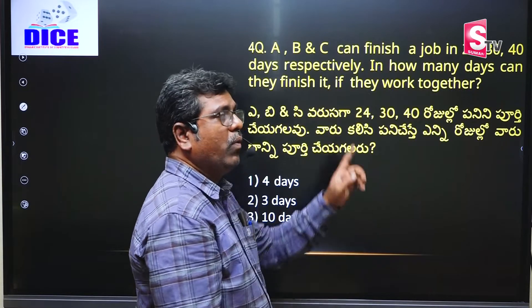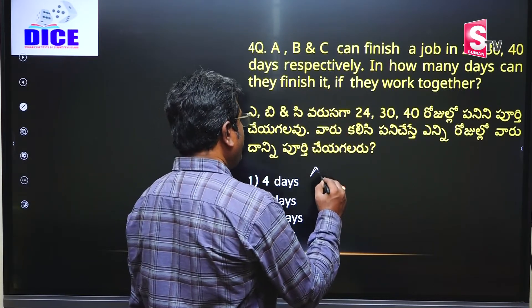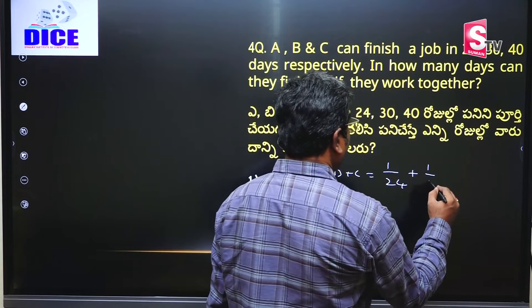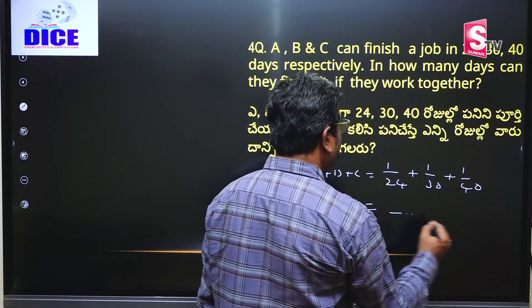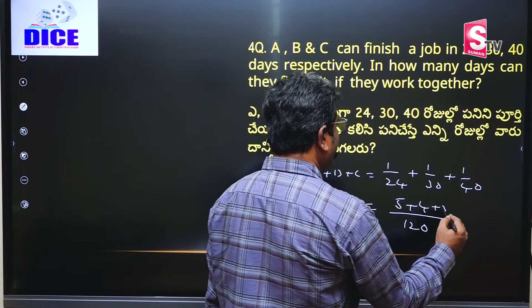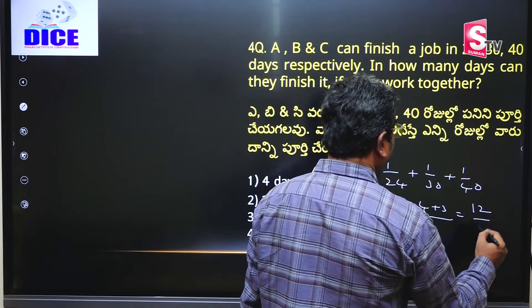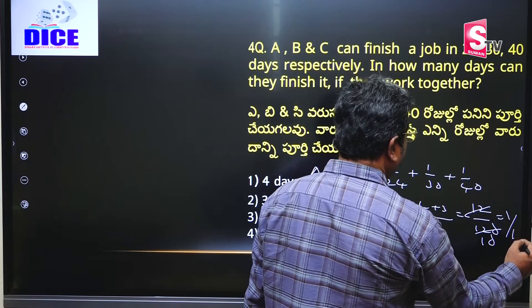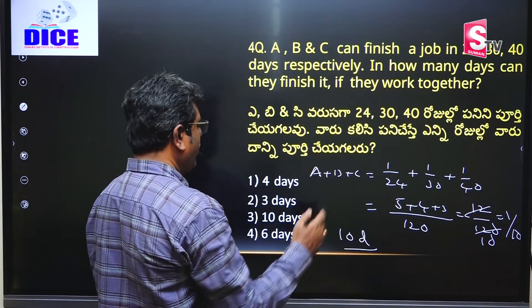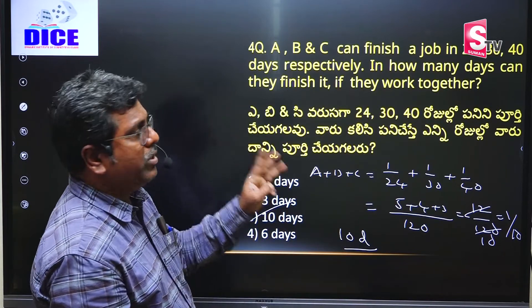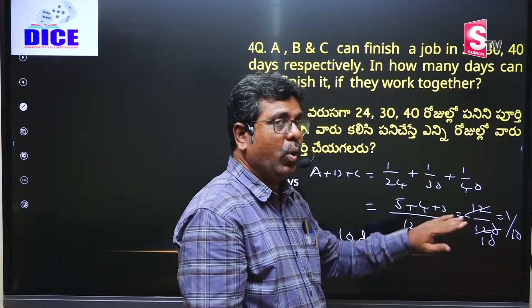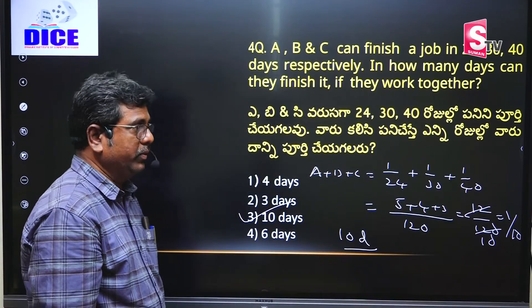Suppose you have three members. Then you go directly to one day's work: A plus B plus C's one day's work equals 1/24 plus 1/30 plus 1/40. The LCM of 24, 30, and 40 is 120. So 5/120 plus 4/120 plus 3/120 = 12/120 = 1/10. So the whole work means reversing that fraction — it becomes 10 days, which is the required answer. If you have three members, this is how you do it.